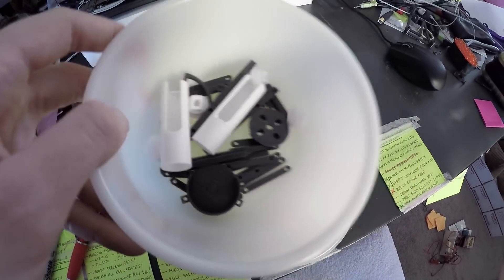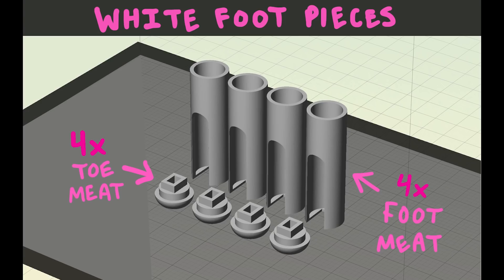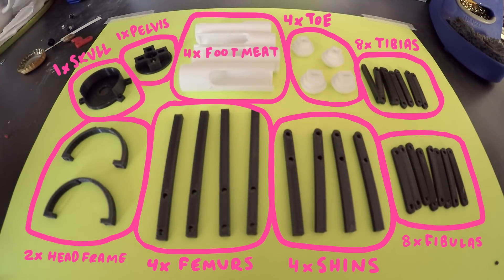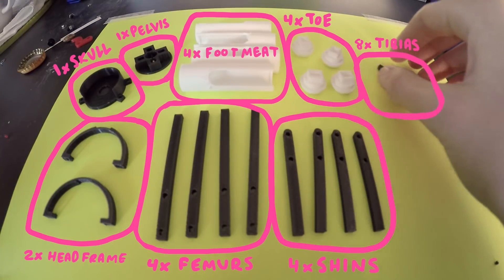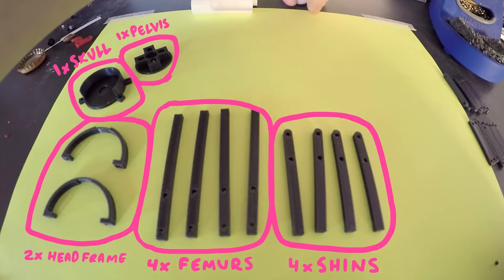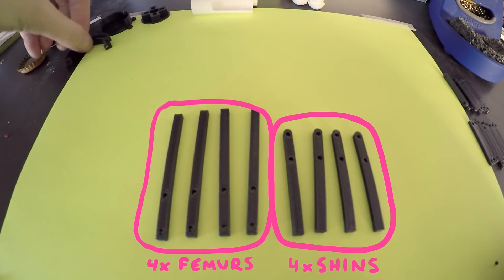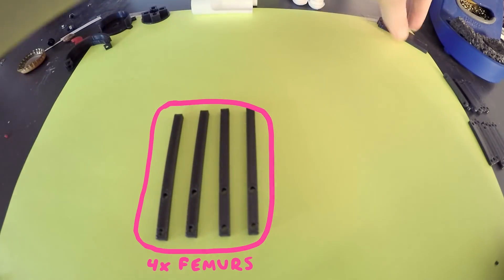There are two trays of parts you will need to print first: one of grey parts and a second of white parts. You should have 8 fibulas, 8 tibias, 4 foot meats, 4 toe meats, 1 pelvis, 1 skull, 2 head frame pieces, and of course, 4 shins and 4 femurs.